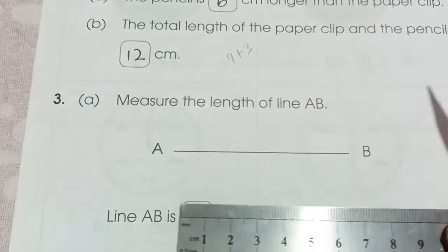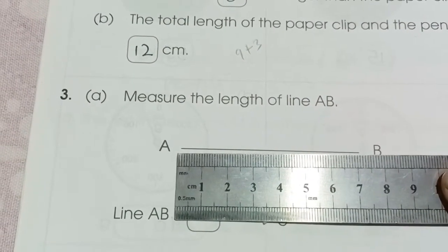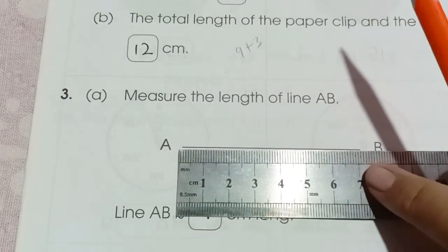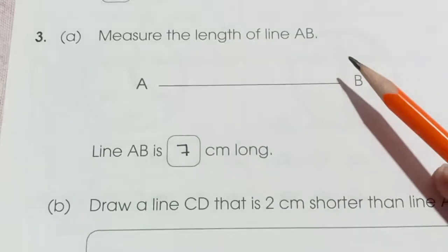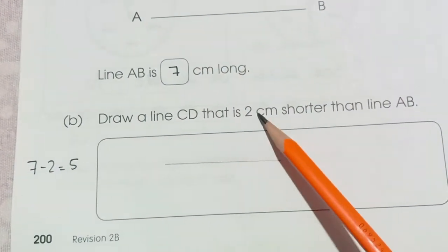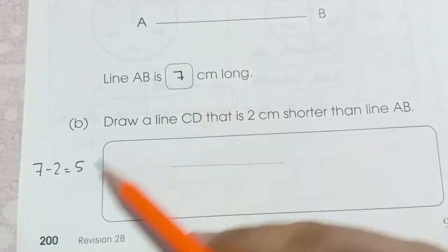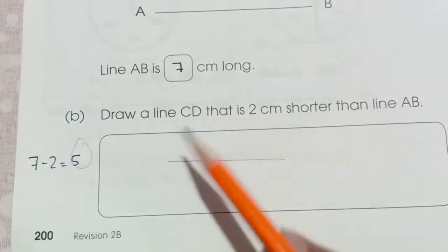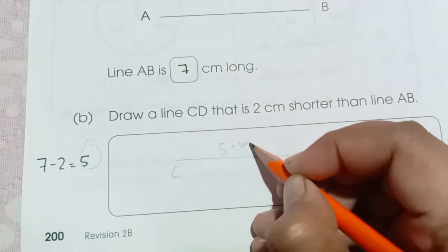Measure the length of AB. So we have to measure the length with the help of scale. Place it here. So here you can see from this side to here we have 7. So AB is 7 centimeters long. Question number B. Draw a line CD that is 2 centimeters shorter than AB. AB is 7 centimeters. 7 centimeters minus 2 is 5. So we have drawn the line CD of 5 centimeters.